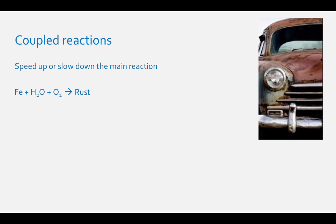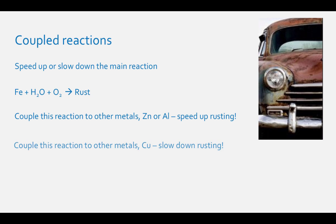There are other examples of coupled reactions that just speed up or slow down the main reaction. Iron will hydrolyze to rust with some water and oxygen. This is why you will see older cars with a lot of rust on them. If you couple this reaction to other metals, such as zinc or aluminum, it will speed up the rusting process, or if you couple it to copper, it slows down the rusting process.